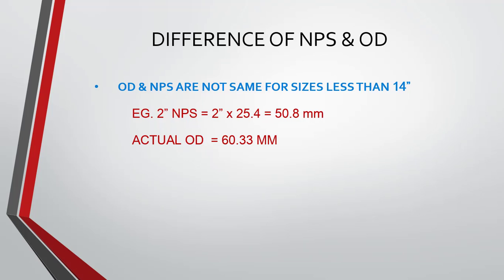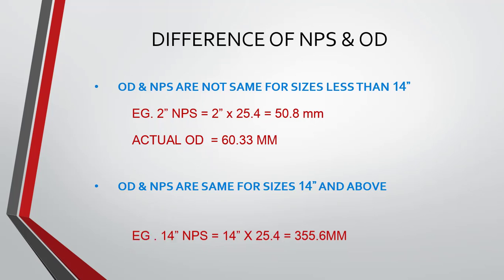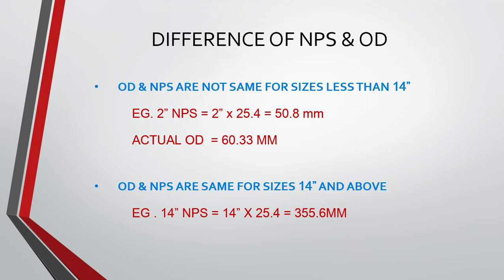For sizes 14 inches and above, OD and NPS are the same. For example, 14 inch NPS converted to metric units is 355.6 mm, and the actual OD of a 14 inch pipe available in the market is also 355.6 mm. This is the unique difference between NPS and OD. Technically, NPS is the term referred to in order to identify the piping size — you can call it pipe size or piping size; it doesn't matter.